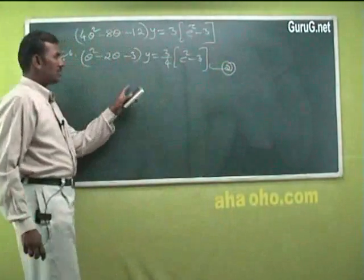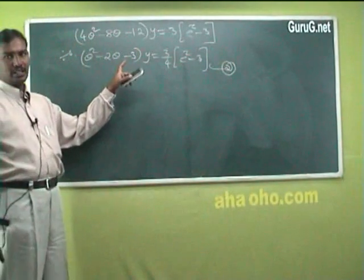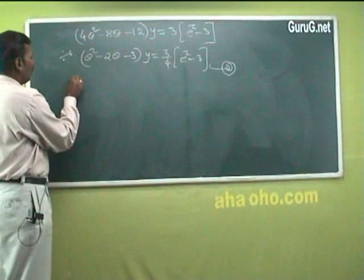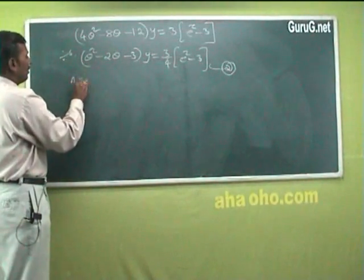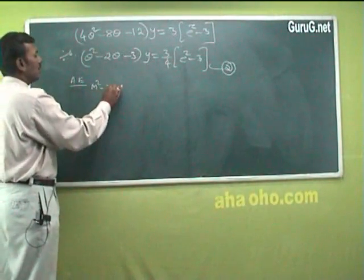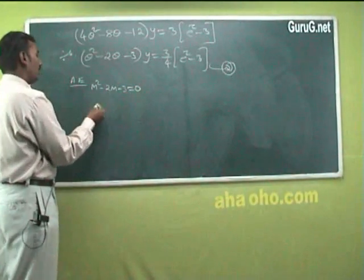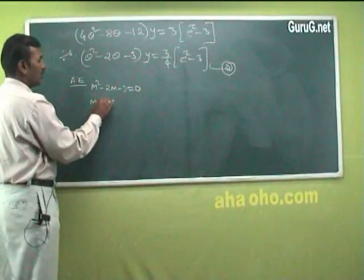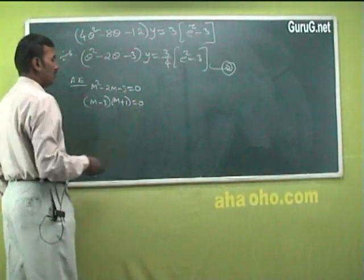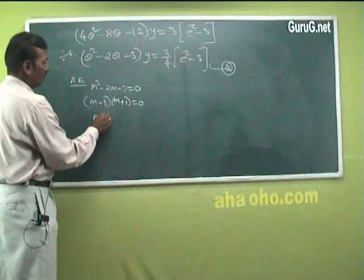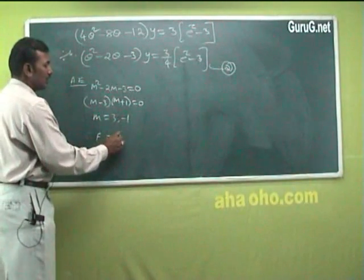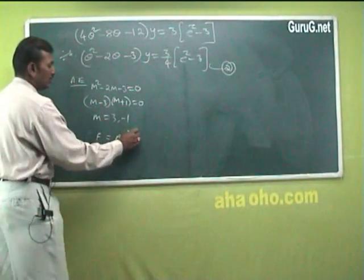Equation 2 is a differential equation with constant coefficients. For the auxiliary equation, replace θ by m: m² − 2m − 3 = 0, which factors as (m−3)(m+1) = 0, giving m = 3 and m = −1. Therefore the complementary function is CF = Ae^(3z) + Be^(−z).